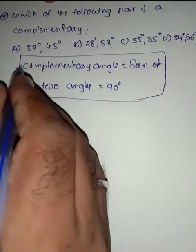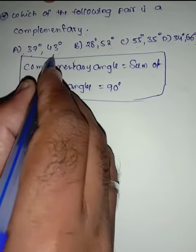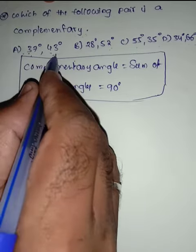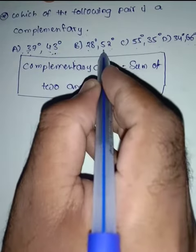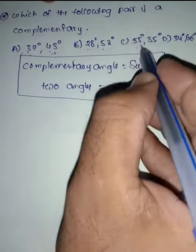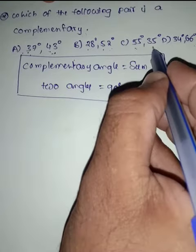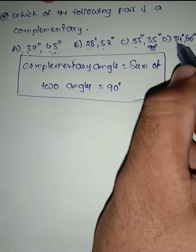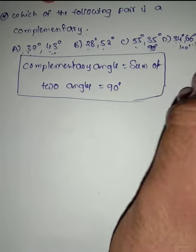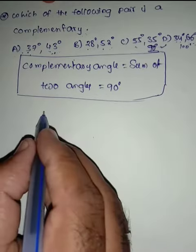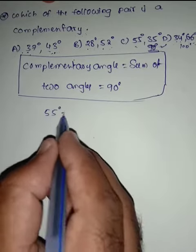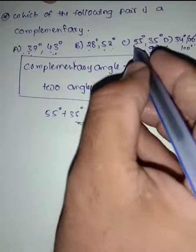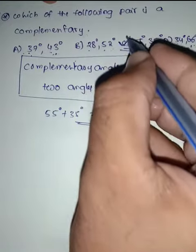Checking each option: 37 plus 43 equals 80 degrees. 28 plus 52 equals 80 degrees. 55 plus 35 equals 90 degrees. 34 plus 66 equals 100 degrees. Option C, 55 degrees plus 35 degrees equals 90 degrees, is the right answer.